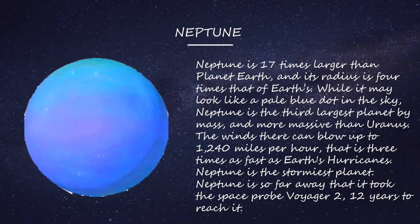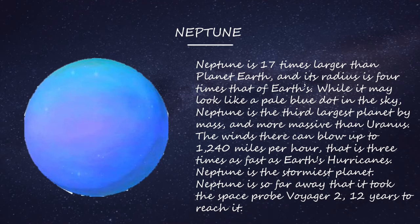Neptune is 17 times larger than planet Earth and its radius is 4 times that of Earth. While it may look like a pale blue dot in the sky, Neptune is the third largest planet by mass and more massive than Uranus. Wind speeds on Neptune can blow up to 1,240 miles per hour — three times as fast as Earth's hurricanes. Neptune is the stormiest planet and is so far away that it took the space probe Voyager 2 twelve years to reach it.